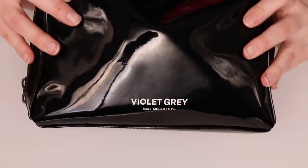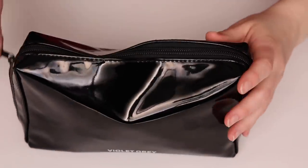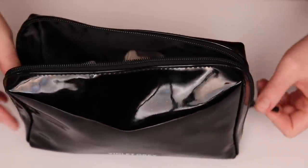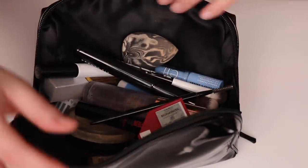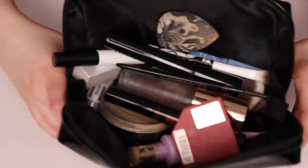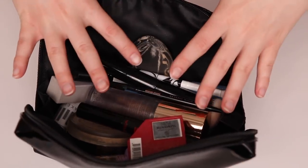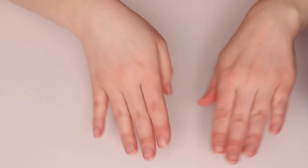This makeup bag, by the way, is from Violet Gray. I really like it because I like the patent leather, but also the zipper is very wide. You can kind of sprawl everything out and see what's going on in here. We've got a lot going on. Let's jump right in. We've got a lot to talk about and I still need to finish packing. I have to do self-tan, do my nails. There's a lot of stuff going on.